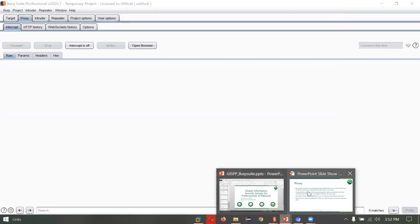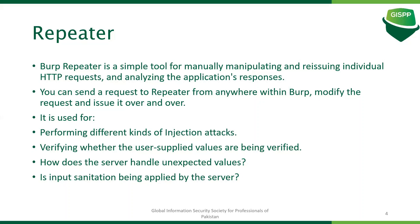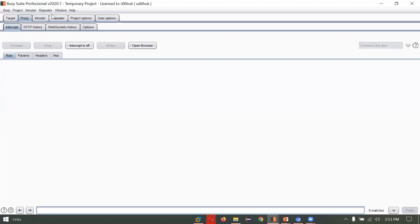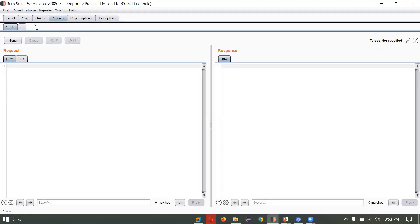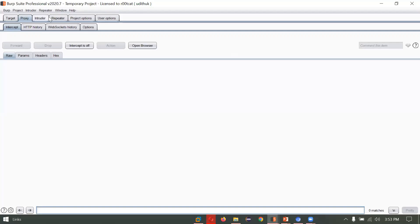Moving on to the next tool, which is Repeater. Repeater is used to repeat, manipulate, or reissue certain HTTP requests to the target. It is used to perform different kinds of injections and to verify how the server is responding to certain requests. Coming to Repeater, there's nothing here yet — to send a request to the Repeater, we first have to intercept it via the Proxy.